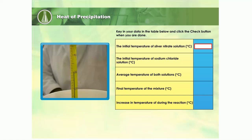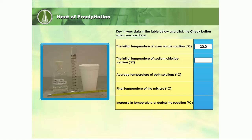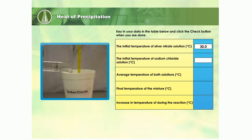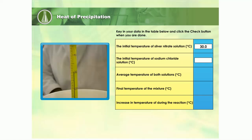Record the reading in the table provided. 50 cubic centimetres of 0.5 mol per cubic decimetre sodium chloride solution is poured into a polystyrene cup. The initial temperature of the solution is measured with a thermometer. Record the reading. What is the average temperature of both solutions?